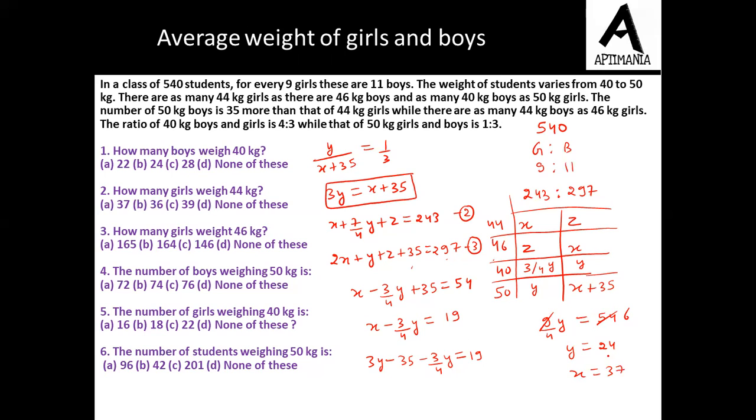And since we have x and y, we can easily find the value of z as well now. So substituting in this particular equation, 2x that is 74 plus 24 plus z plus 35 equals 297.